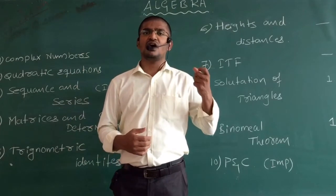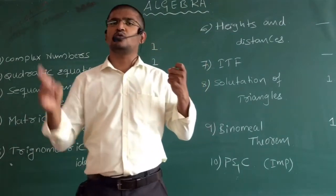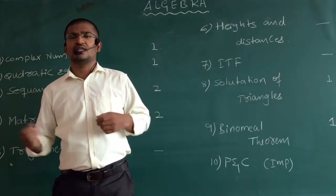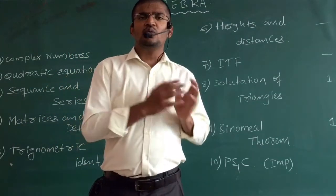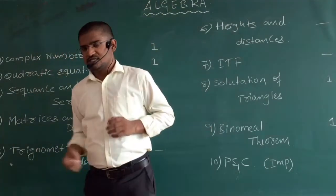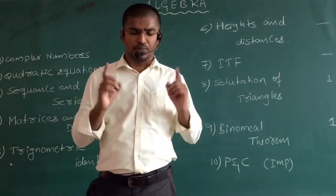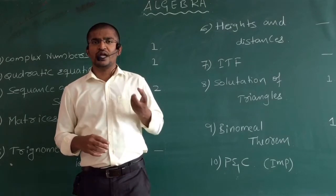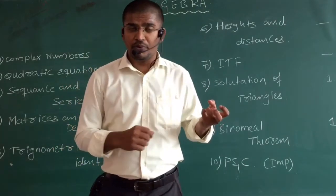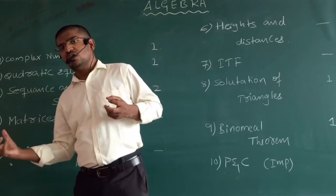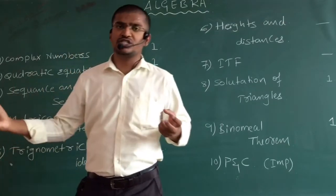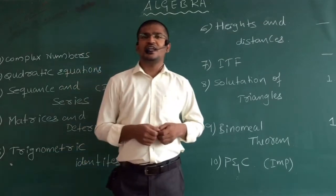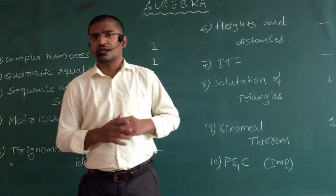What is this 20? These are MCQs where only one option is correct. And the 5 are your numerical type of questions. Please remember: the 20 MCQs are going to have a negative mark. But these 5 numerical type questions are not going to have any negative mark.